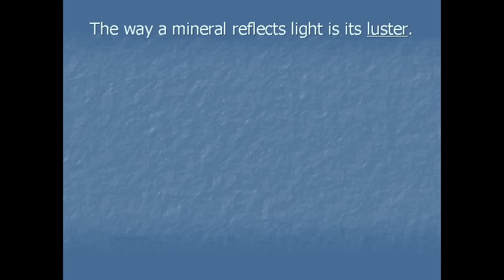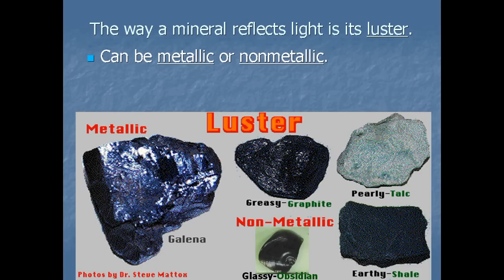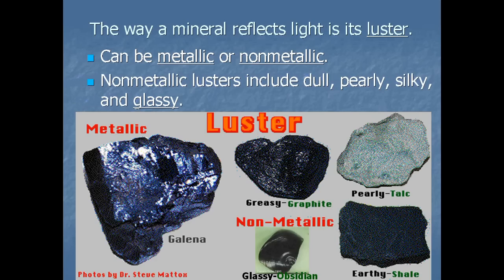The way a mineral reflects light is its luster. A mineral's luster can be metallic or non-metallic. Metallic minerals are shiny like metal — you can actually see the word metal in the word metallic. Non-metallic minerals have a luster that looks dull, pearly, silky, or glassy.